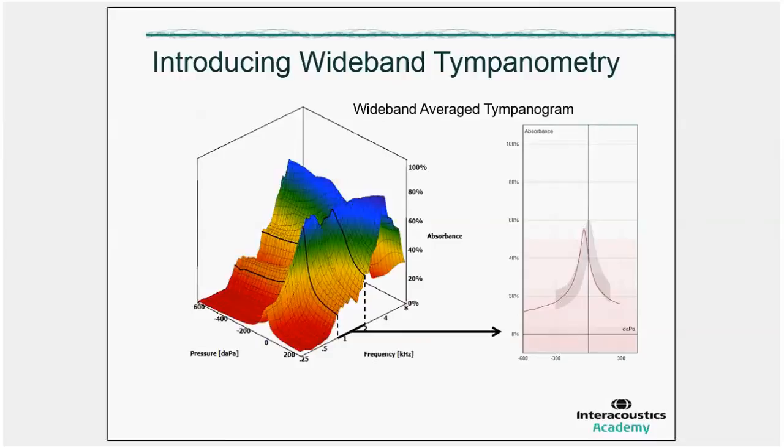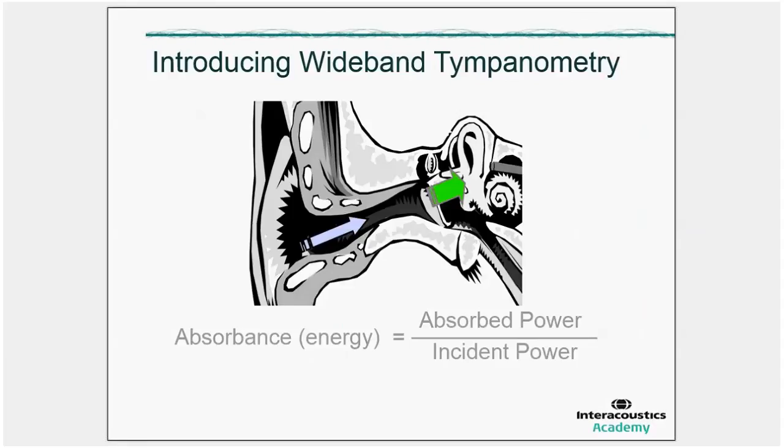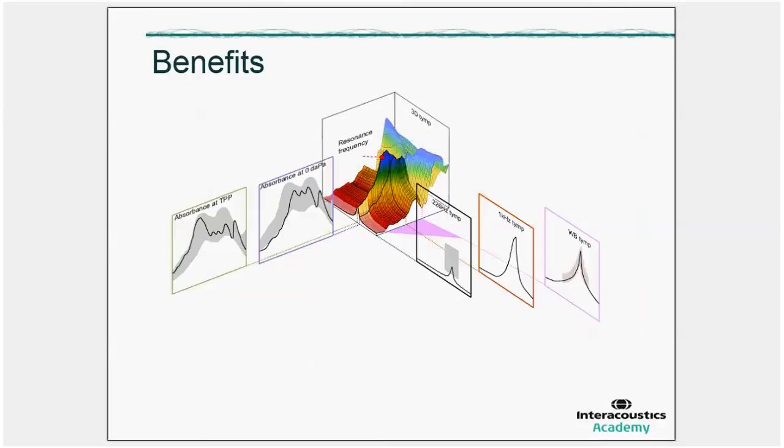Let's continue with the presentation. I ended up at the benefits. What appears now on the screen is an overview of all information that we pull out of a 3D graph. We see on the left-hand side, we see absorbance graphs. On the right-hand side, we see tympanograms. The way we explain it is that the tympanogram side is about improving the traditional. On the left-hand side, that is adding new possibilities to differential diagnostics. That is where most of the value comes from, including the full frequency range. Then in the middle, we have the resonance frequency.